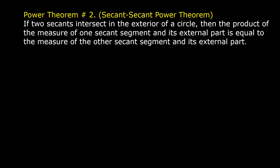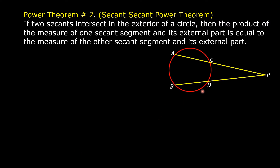Power Theorem No. 2: Secant-Secant Power Theorem. If two secants intersect in the exterior of a circle, then the product of the measure of one secant segment and its external part is equal to the measure of the other secant segment and its external part. Based on this illustration, according to the theorem, PC times PA is equal to PD times PB. We are going to prove the theorem using a two-column proof.